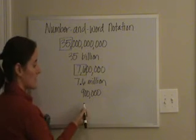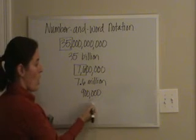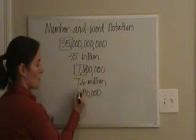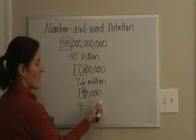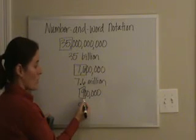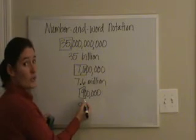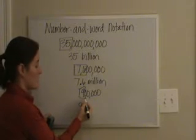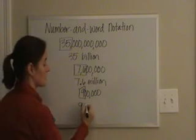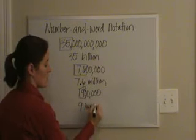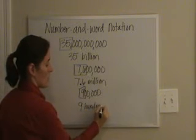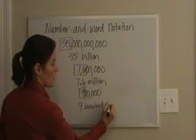In our last example, our only important number is the nine. So we bring our nine down. It's in the hundred thousands place, so we say it's nine hundred thousand.